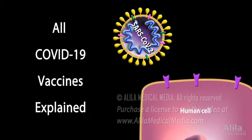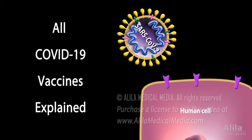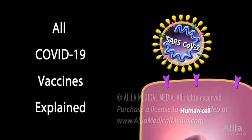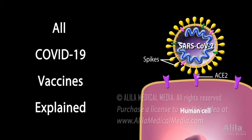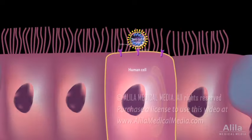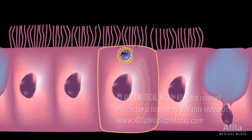During a viral infection, the virus attaches itself to a human cell using its spikes. Following entry to the cell, it uses the host cell's machinery to replicate, producing viral proteins and genetic material.